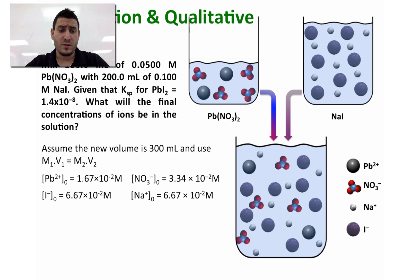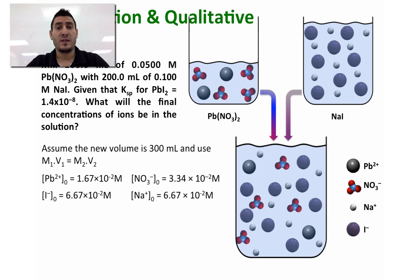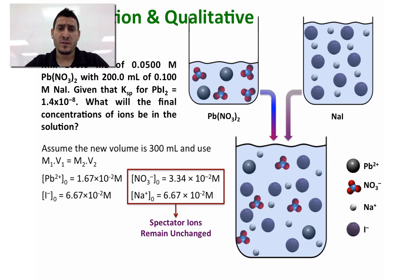Using this rule we can calculate the initial concentration of each ion: lead, iodide, nitrate, and sodium. Since the Ksp is given for lead iodide, and we know based on solubility rules that sodium nitrate will not precipitate because it is highly soluble in water, the spectator ions are nitrate and sodium, so their concentrations remain unchanged. The reaction will happen between lead and iodide, and to check whether precipitation will happen I need to find the reaction quotient.